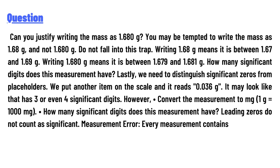Leading zeros are just placeholders. We put another item on the scale and it reads 0.036 g. It looks like that has three or even four significant digits. However, convert the measurement to milligrams — 1 g equals 1000 mg. How many significant digits does this measurement have? Leading zeros do not count as significant.